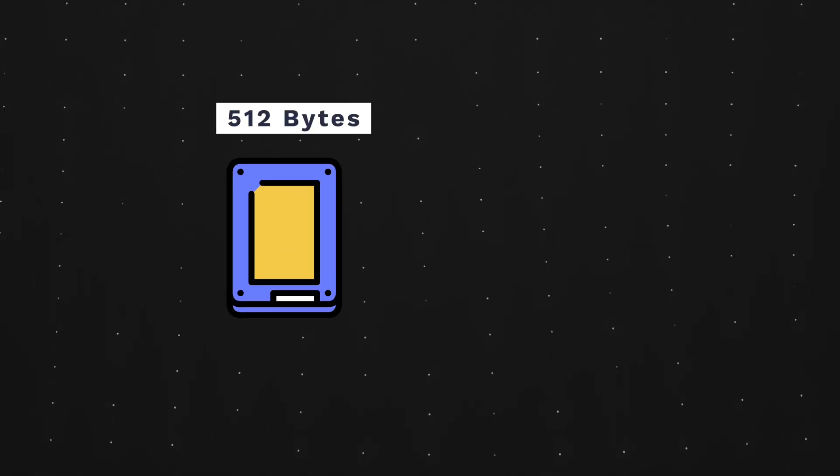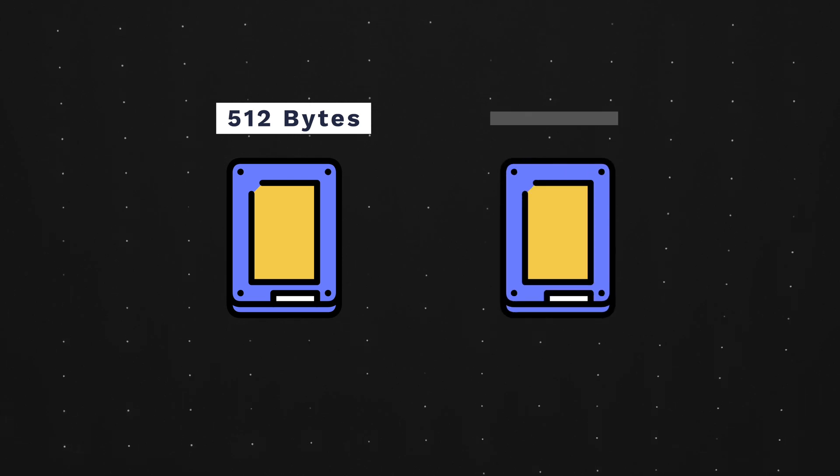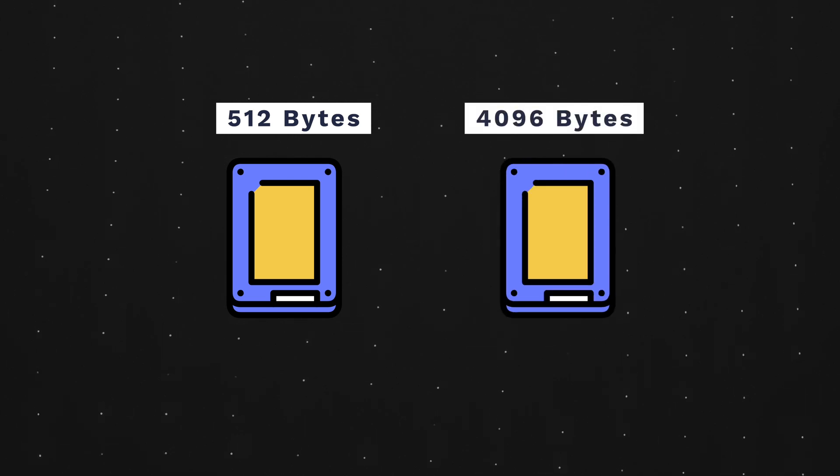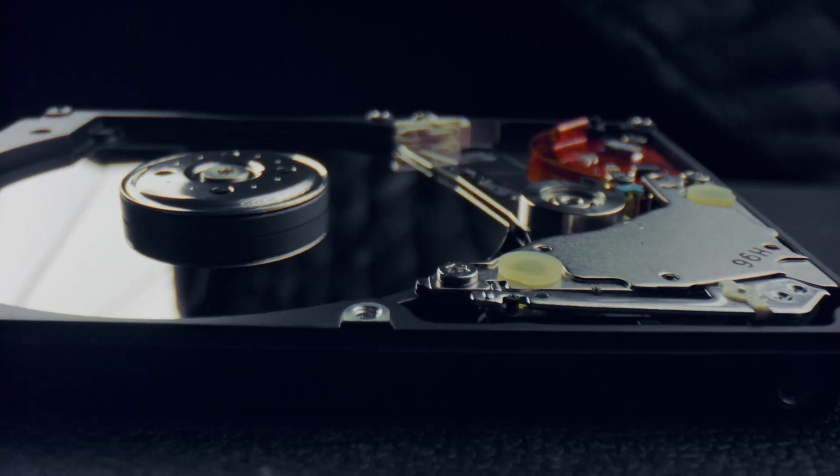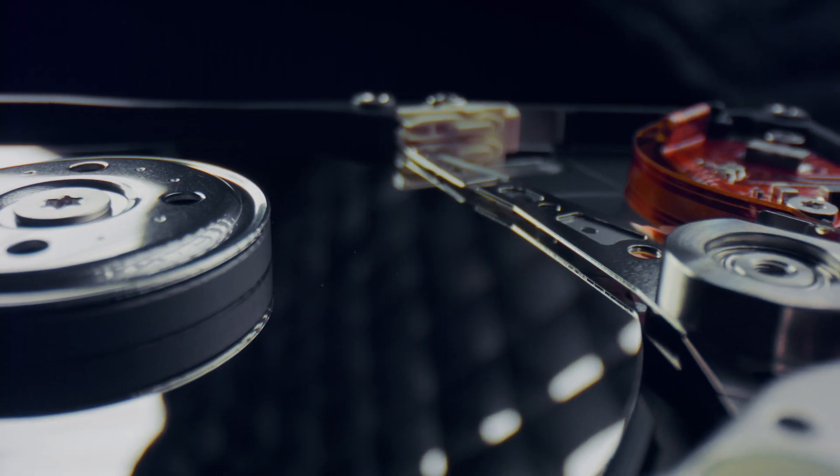An important thing to note is that the sector size doesn't mean that your drive has extra space. A 500 gigabyte hard disk with 512 byte sector sizes and a 500 gigabyte hard disk with 4K bytes of sector sizes both have a storage capacity of 500 gigabytes. All it means is that with a larger sector size, the data stored isn't as spread out as on a drive with a smaller sector size. The number of sectors on a hard disk is directly correlated to the storage capacity — the more sectors, the more storage space.